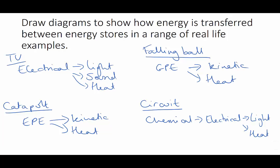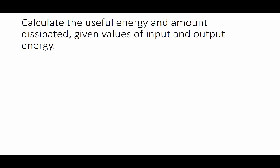What's going on? We need to be able to calculate how much energy that goes into something is useful and how much is wasted or dissipated, given values of input and output energies. If we look at that circuit we were just looking at, if we say the batteries are supplying 10 joules of energy, joule is the unit of energy, but only say 8 joules of that is going to turn into useful light energy.